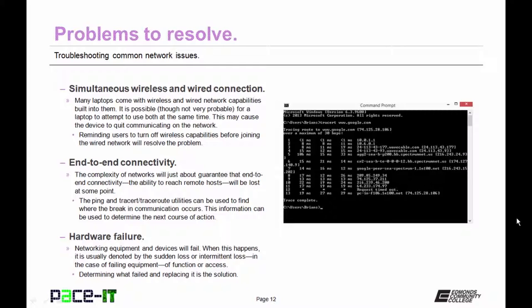Last up is hardware failure. Networking equipment and devices will fail. When this happens, it is usually denoted by the sudden loss or intermittent loss of networking functions or access. The key to resolving this issue is in determining what has failed and replacing it.